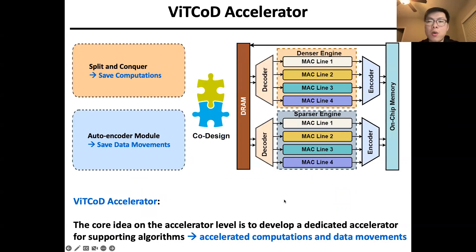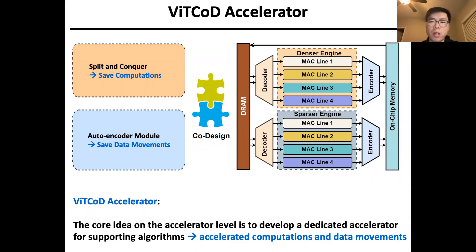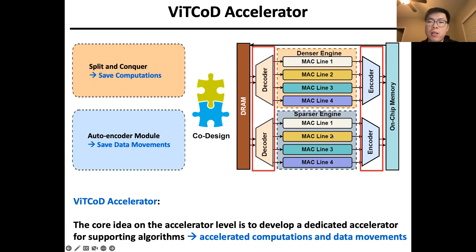In particular, our adopted hardware accelerator features a two-pronged architecture with dense and sparse engines to handle the enforced workloads. It also integrates the encoder and decoder mechanism to encode QK features before moving to memory and recover them before computation, saving data movements.